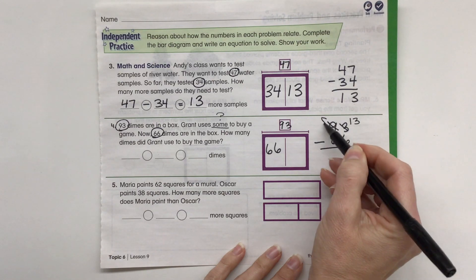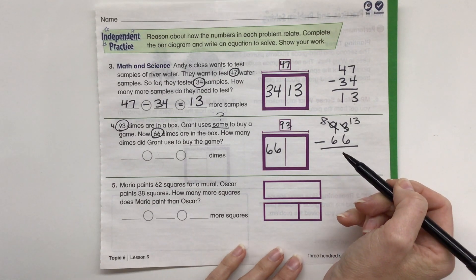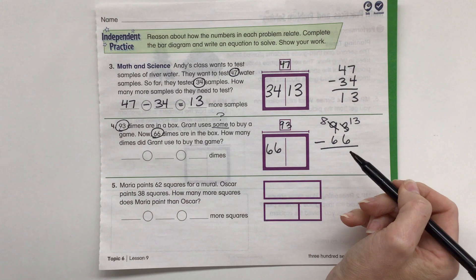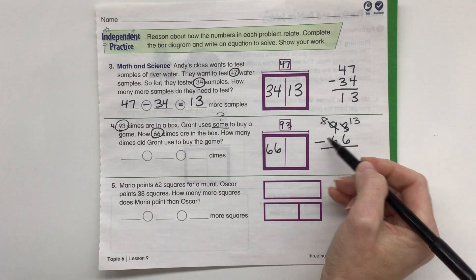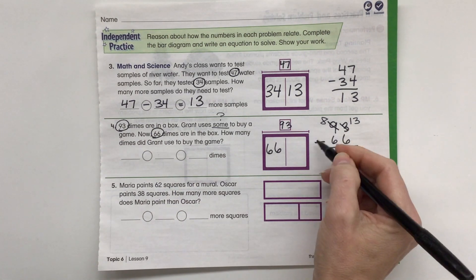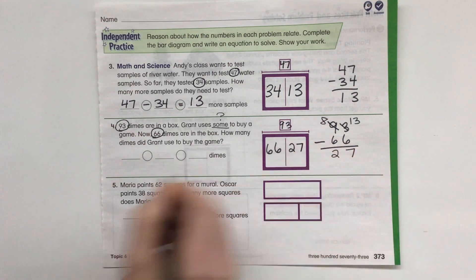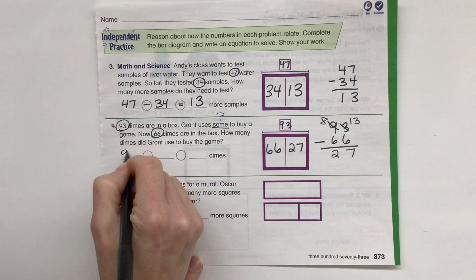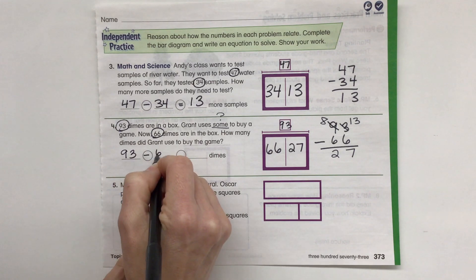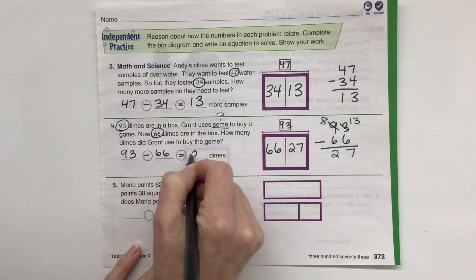That becomes 13, that becomes 8. You guys are experts on this, we've done eight lessons on it, so you know exactly why. 13 minus 6 is 7, 8 minus 6 is 2. So we have 27 left over. So we know that 93 minus 66 equals 27.